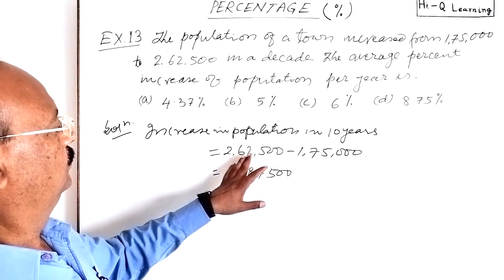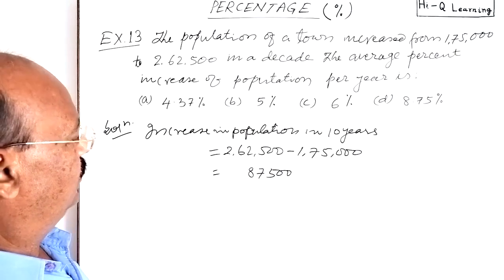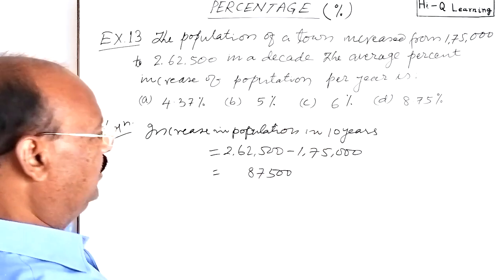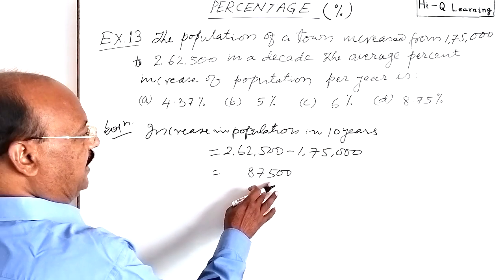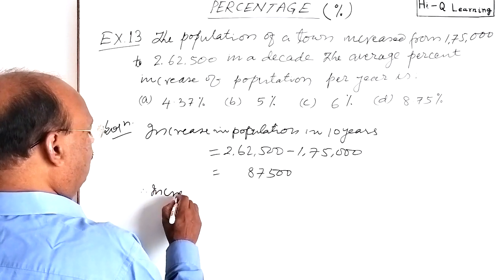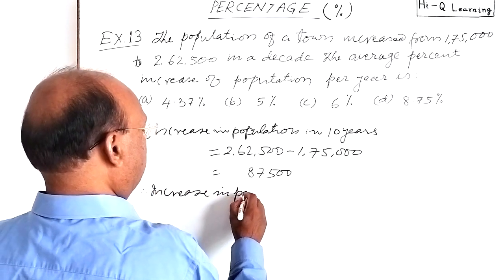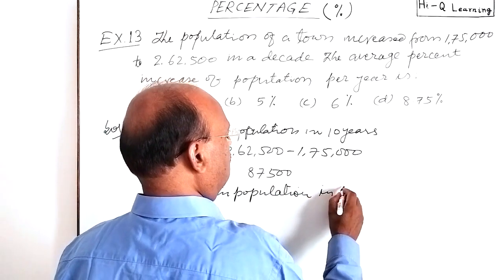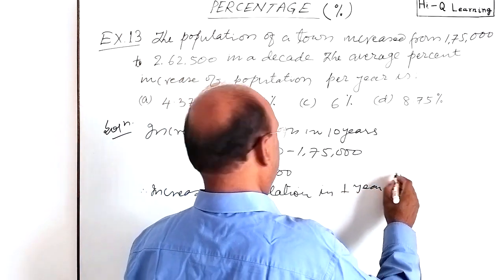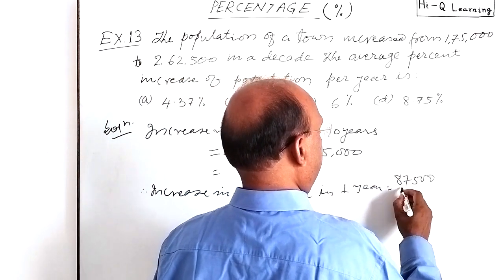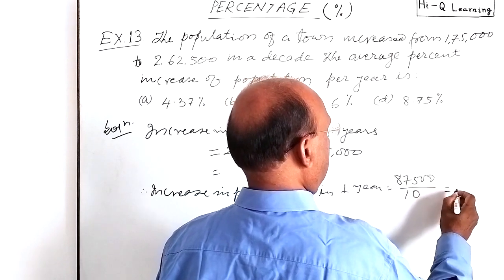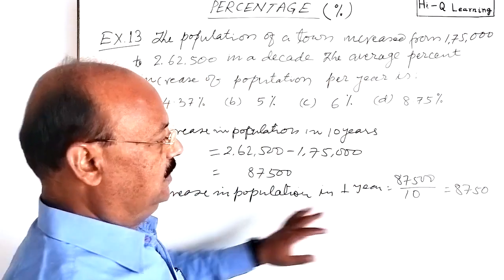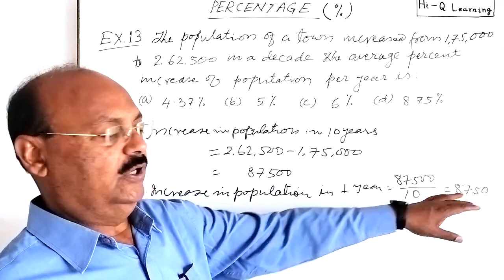So this is the increase in population. In how many years? In 10 years. So in one year, we can divide it by 10. Therefore, increase in population in one year, this is equal to 87,500 divided by 10, and this is equal to 8,750. This is the increase in population in one year.